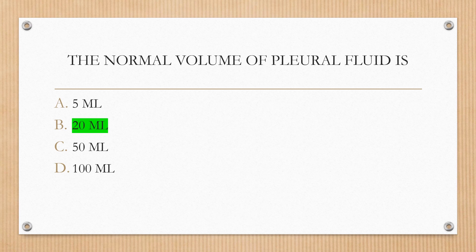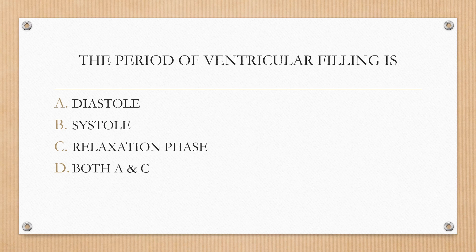Next question. The period of ventricular filling is: option A diastole, option B systole, option C relaxation phase, option D both A and C.